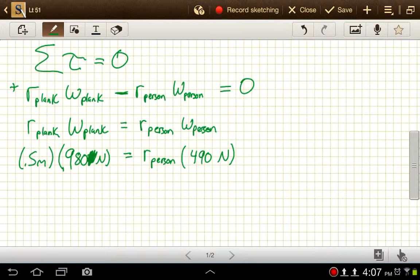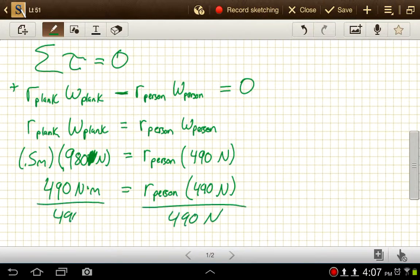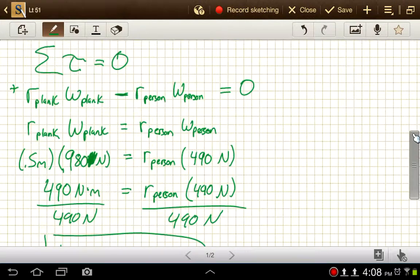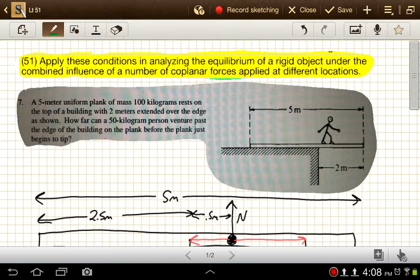Now we've got, let's see, so 0.5 times the 980, that'd be 490 newton meters is equal to the distance to the person times 490 newtons. And if we divide both sides by 490 newtons, we get 1 meter is the distance to the person. It's the farthest they can walk out on this plank before they start to cause that to fall, 1 meter.